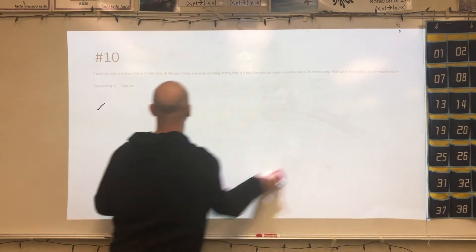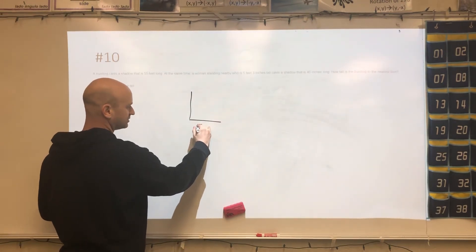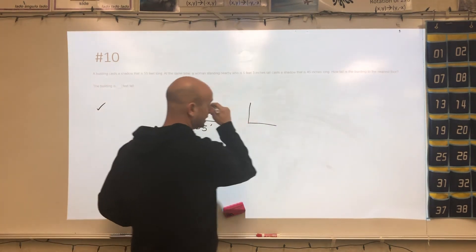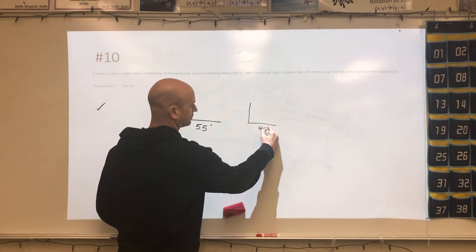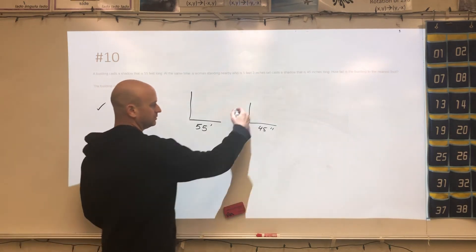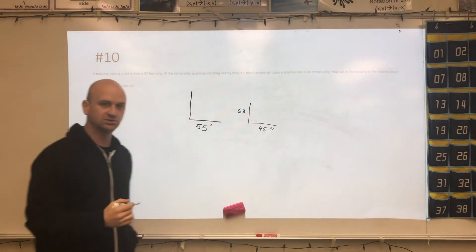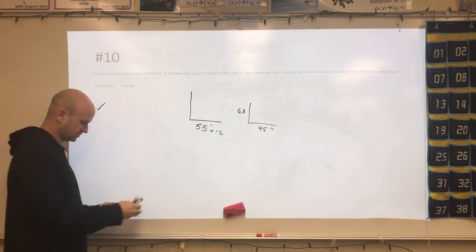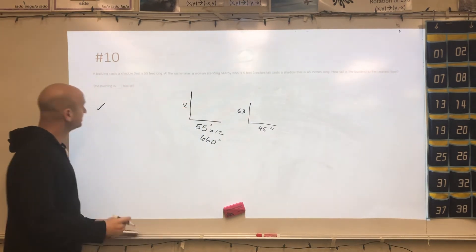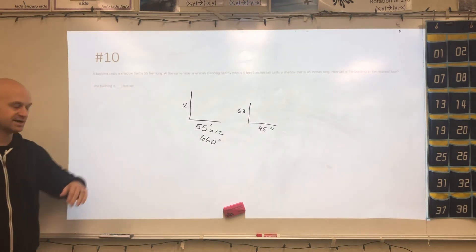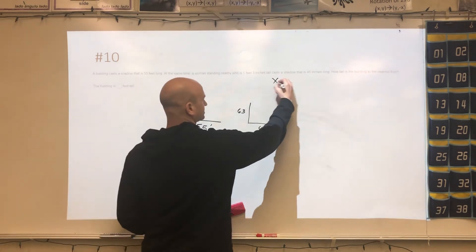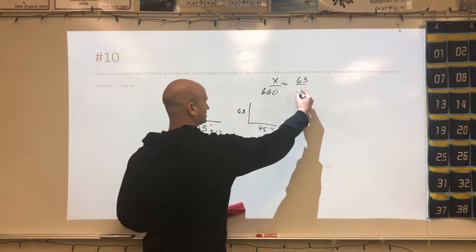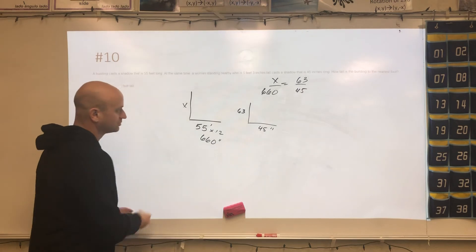All right, next we have a building in the shadow. So here's your building, here's your shadow. The shadow is 55 feet long, and we're going to end up needing to convert that in a second. Over here, we have a person whose shadow is 45 inches, but their height is 5 foot 3. So what we want to do in this case is convert the height to inches and convert this to inches as well. So we'll multiply by 12, which gives us 660 inches. At the very end, because it wants feet, we're going to have to convert it back. So this at least puts us in the same units. So the height of the building would partner up with the height of the person. The shadow of the building would partner up with the shadow of the person like that. Cross multiply and divide.